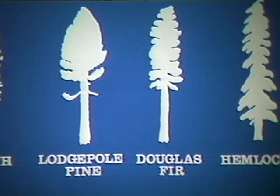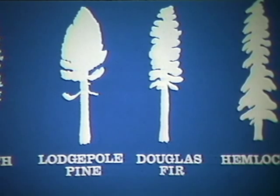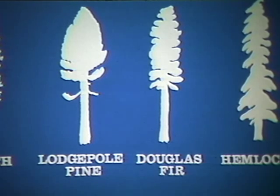The four major hosts for dwarf mistletoe are lodgepole pine, hemlock, larch, and Douglas fir. Other trees can be affected, but usually in a minor way. Western red cedar, yellow cedar, western yew, and juniper appear to be immune. The disease in lodgepole pine is widely distributed throughout the province.